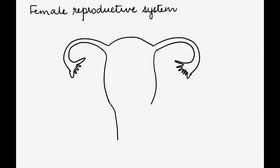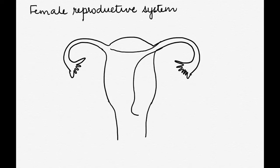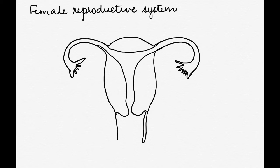The lines are then further extended down to form the uterus and the vagina. The inner part, that is the wall of the uterus, is shown by extending the line from the fallopian tube, bringing it down to form a narrow opening and then the vagina.